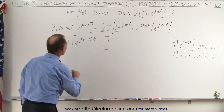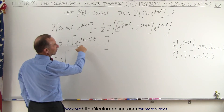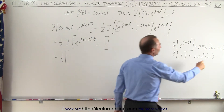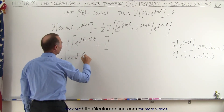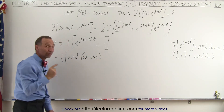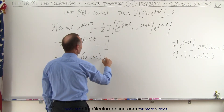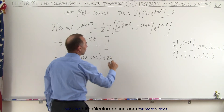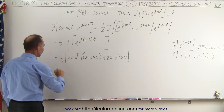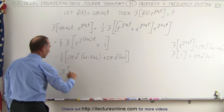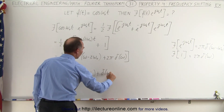Now that we know those, let's plug them in. This becomes one-half times: taking the Fourier transform of e to the j two omega sub-naught t gives two pi times the delta function of omega minus two omega sub-naught — a frequency shift of two omega sub-naught. Taking the Fourier transform of one gives plus two pi times the delta function of omega. Factoring out two pi and canceling the twos, this becomes pi times the delta function of omega minus two omega sub-naught plus the delta function of omega.